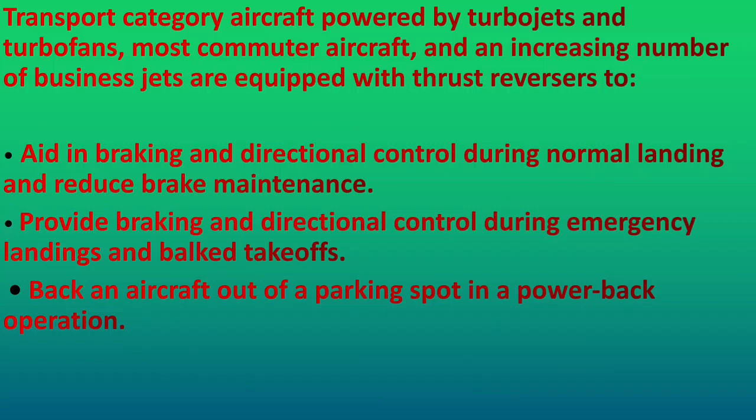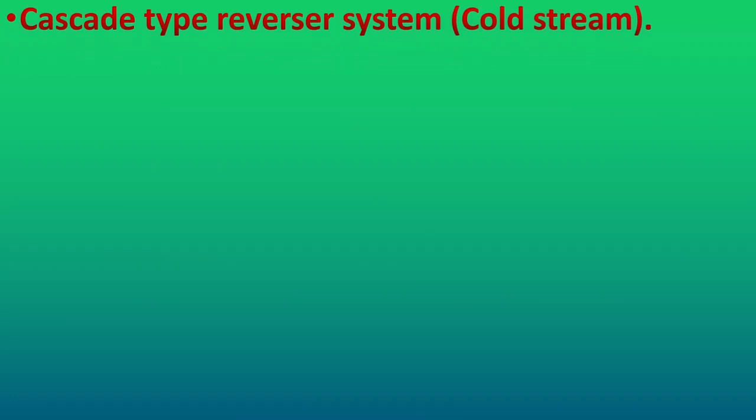Exhaust gas typically exits the reverser at an angle to the engine's thrust axis. As such, maximum reverse thrust capability is always less than the forward thrust capability. It is controlled by the pilot with a lever in the cockpit. There are different types of thrust reversal systems used in gas turbine engines. The first one is the cascade type reversal system, also called the cold stream type reversal system.